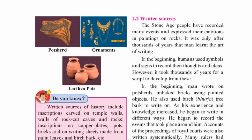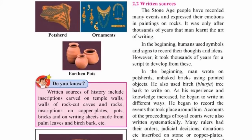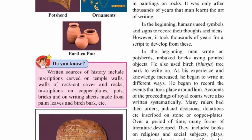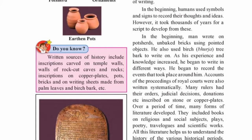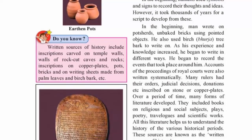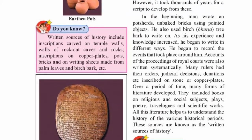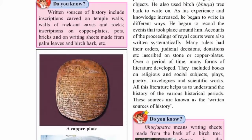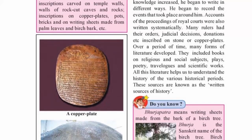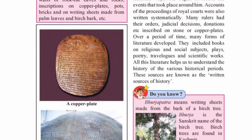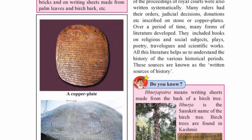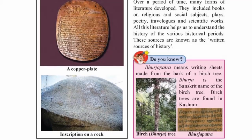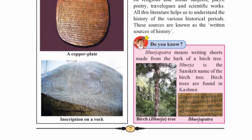Third, written sources. In the stone age, people recorded events and expressed emotions in paintings on rocks. Later, man used symbols and signs to record their thoughts and ideas. Thousands of years later, a script was developed. In the beginning, man wrote on pot sherds and big bricks by using pointed objects. He also used Burjapatra, the bark of the birch tree, to write.